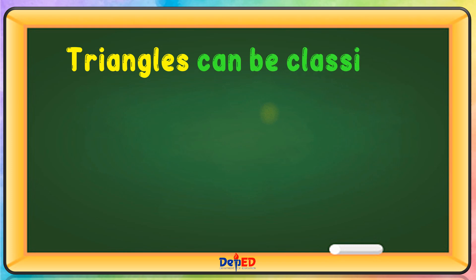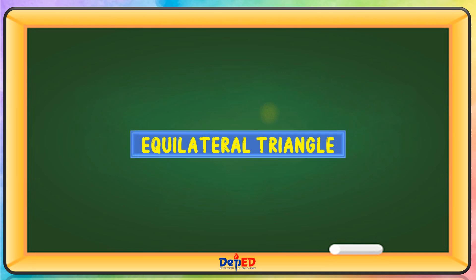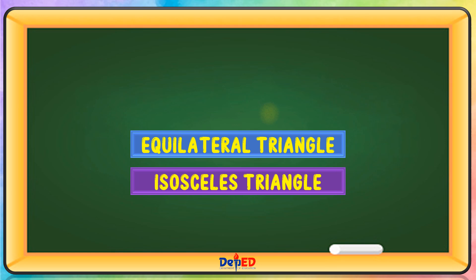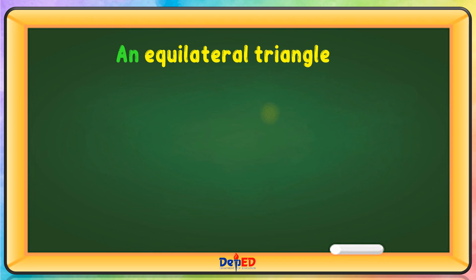Triangles can be classified according to its sides: the equilateral triangle, the isosceles triangle, and the scalene triangle. An equilateral triangle has three equal sides.